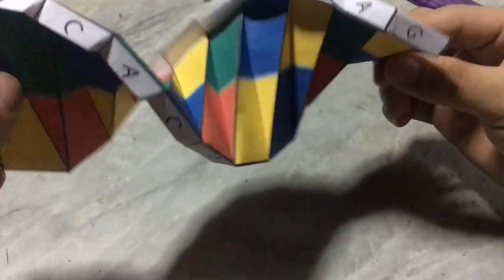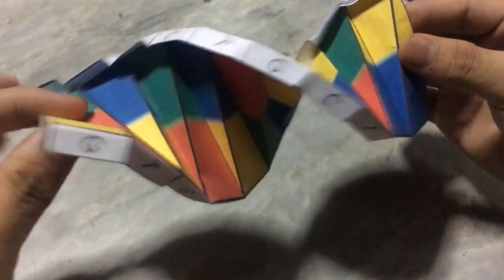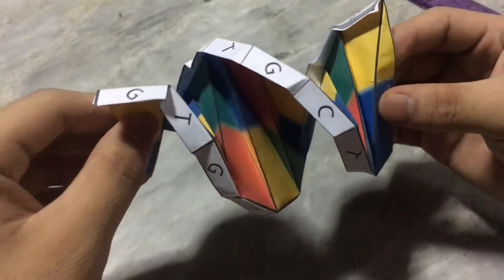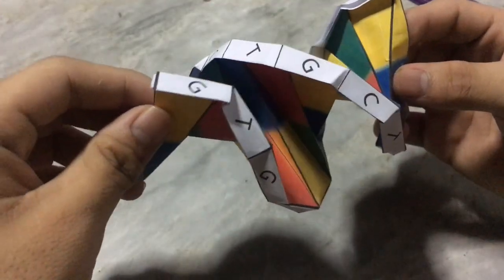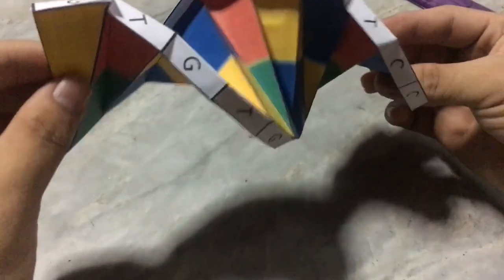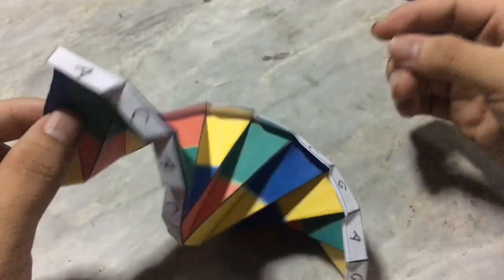Those bind together as complementary pairs: A with T, C with G, and vice versa. Okay, that's it. Thank you very much.